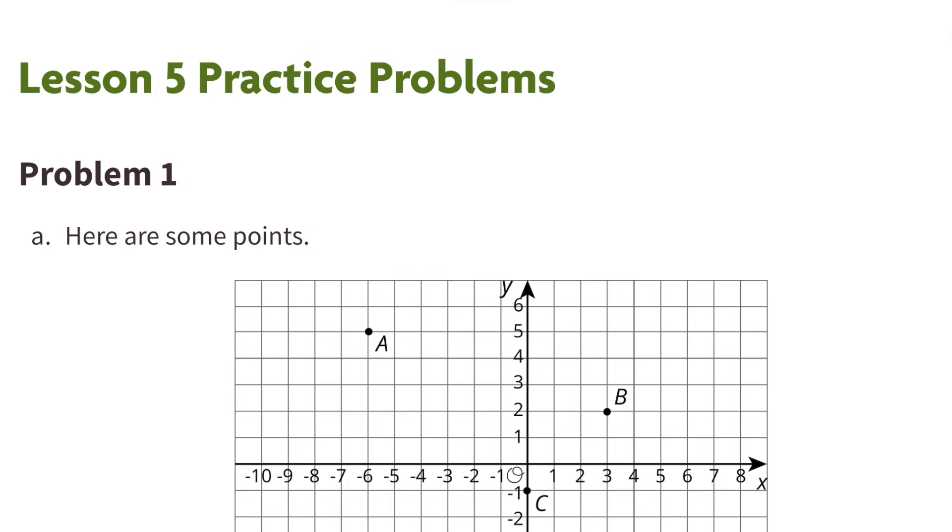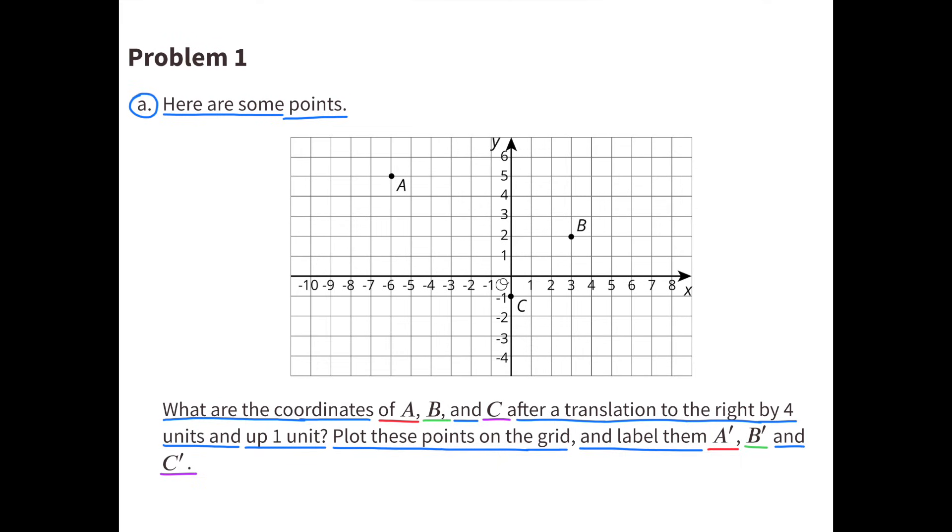Eighth Grade Unit 1 Lesson 5 Coordinate Moves Number 1. Here are some points. What are the coordinates of A, B, and C after a translation to the right by 4 units and up 1 unit?